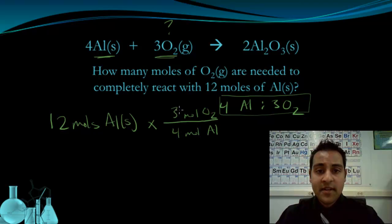So, I've got my work set up. 12 times 3 divided by 4 is going to tell me that I need 9 moles of oxygen to completely react with 12 moles of aluminum.